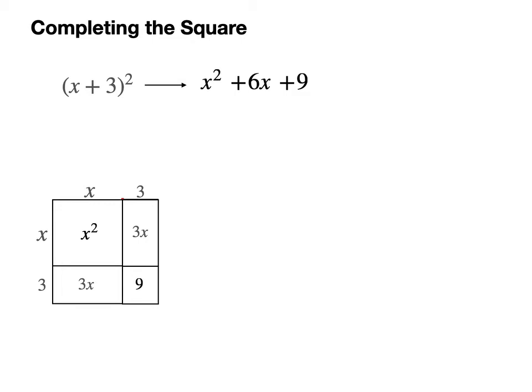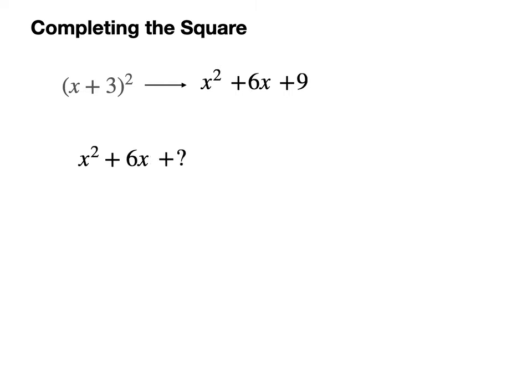Okay, so now I'll use this same example but this time I'll ask the question in reverse. I'll give you the x squared plus 6x, and I'll ask what number do you need to complete the square and so end up with a square shape.